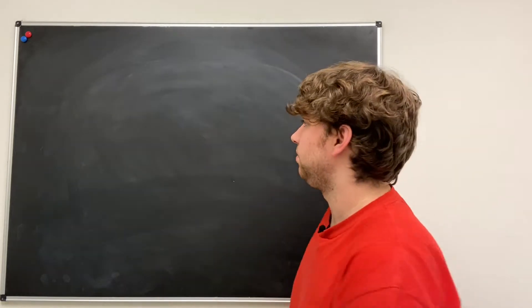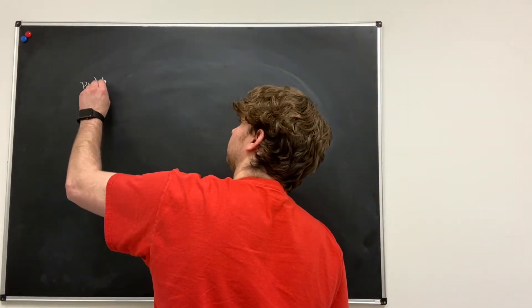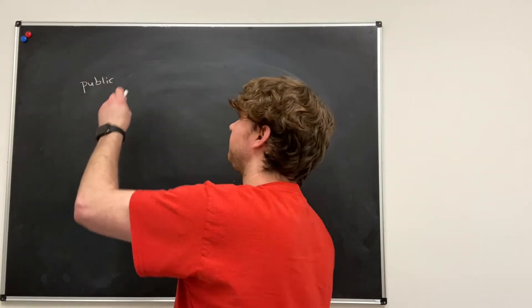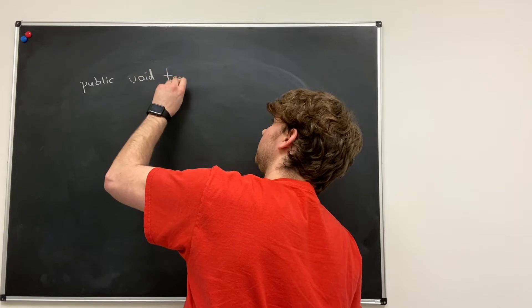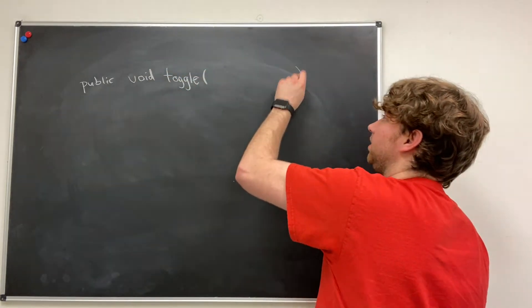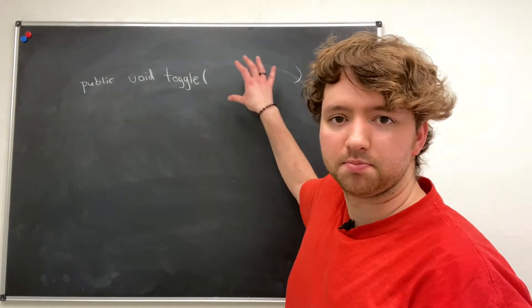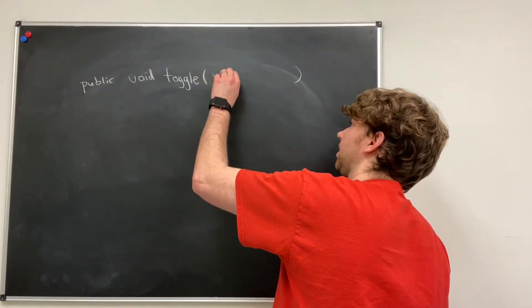Alright, so we have something like this. Public, we're making a method by the way. Void, and we can name it whatever we want. We'll call it toggle. And we kind of ignored this part a little bit in the previous episode, but now I want you to write out this or type it out if you're typing.